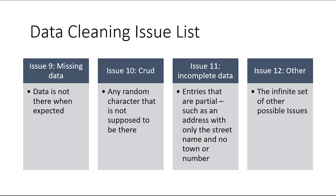Issue nine is missing data. Data mining is not as sensitive to missing data as other analytics. Unless it's deleted on purpose — missing not at random — missing data really isn't that much of a problem for the algorithms we're going to use in this class. Issue ten I describe as crud — with text and character data it's basically random spaces and characters that shouldn't be there. Issue eleven is incomplete data, which is not the same as missing data. Missing data is not there at all, but incomplete data is something like entering a town but not the state — there's data there, but it's partial.